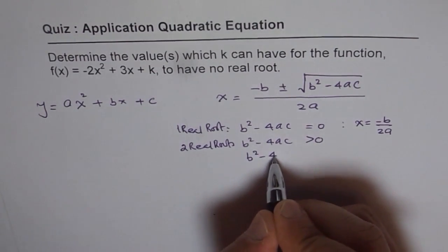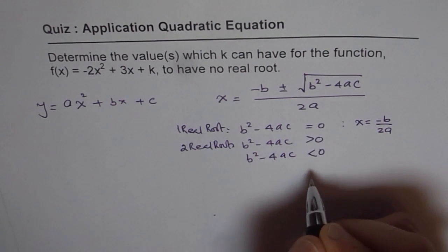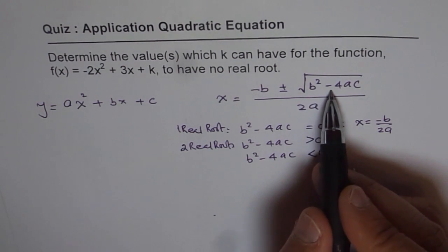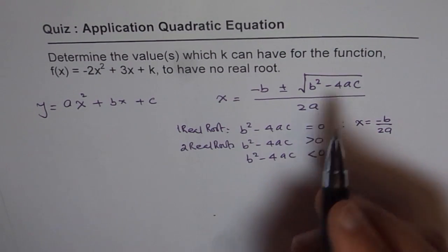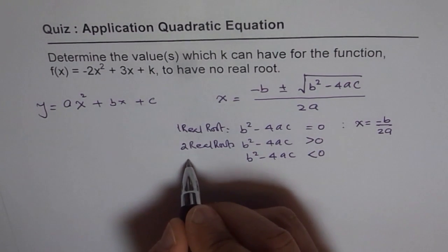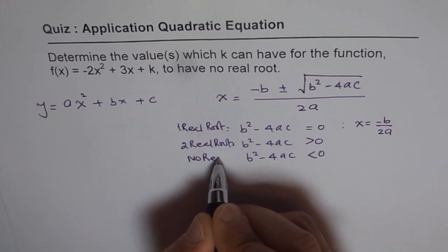How about b² - 4ac less than 0? We will have something negative within the square root which is not real, imaginary. So we have no real roots. That is the condition for no real roots.